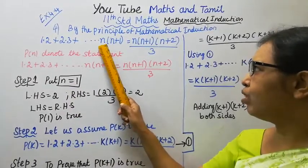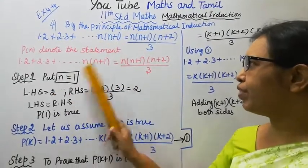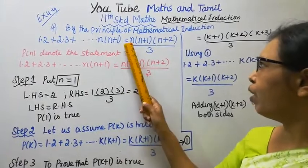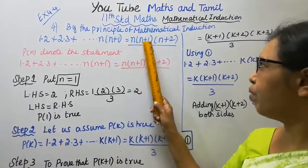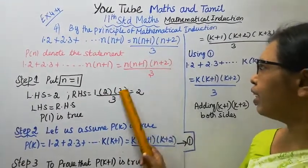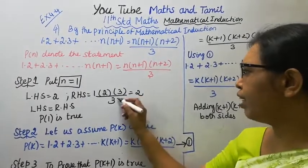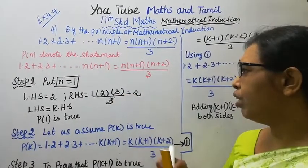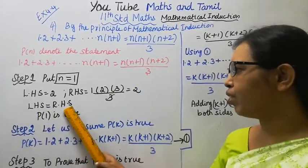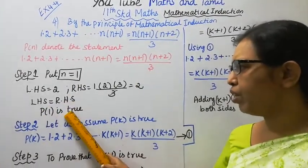For n=1: Left hand side = 1·(1+1) = 1·2 = 2. Right hand side = 1·(1+1)·(1+2)/3 = 1·2·3/3 = 2. Left hand side equals right hand side, so P(1) is true.